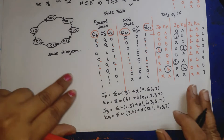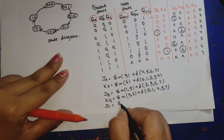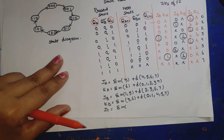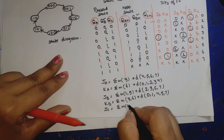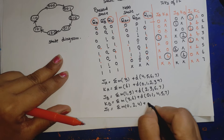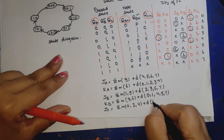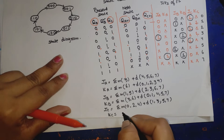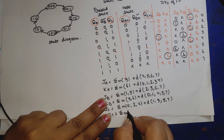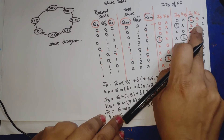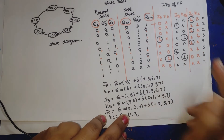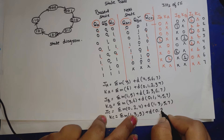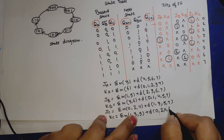JC equals summation of minterms at 0, 2, and 4, plus don't cares at 1, 3, 5, and 7. KC equals summation of minterms at 1, 3, and 5, plus don't cares at 0, 2, 4, 6, and 7.